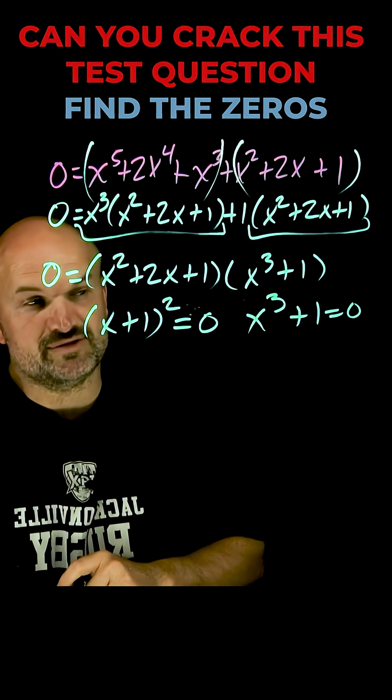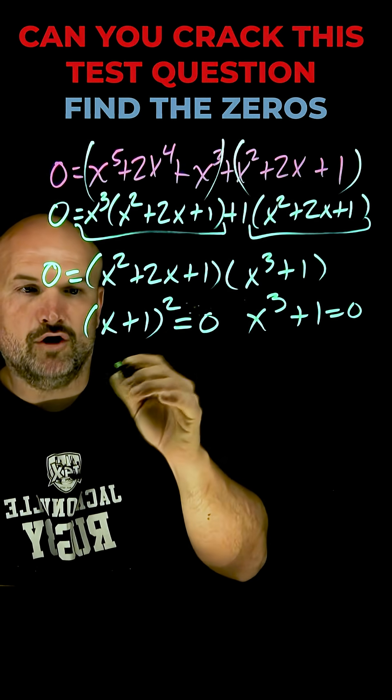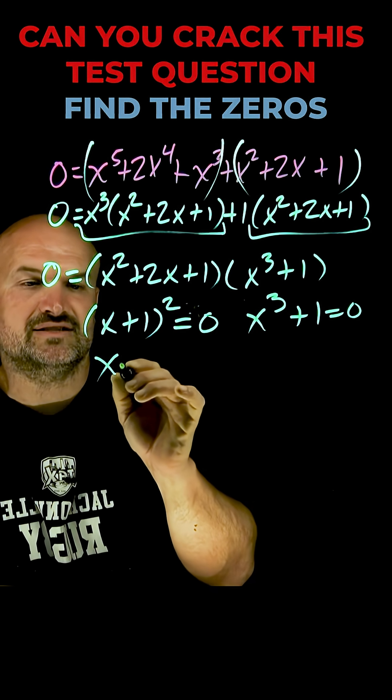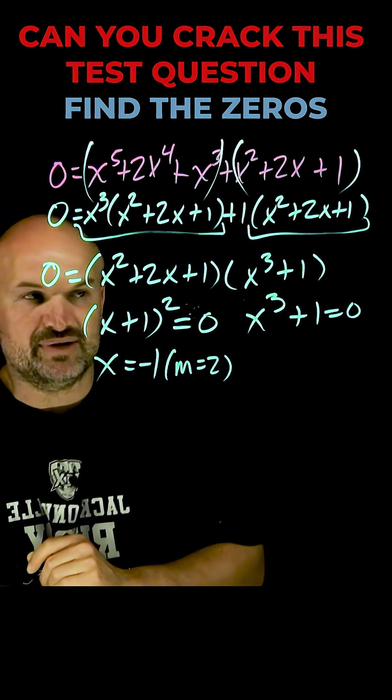Well the only way to factor this is going to be what we call a difference of two cubes. So we need to be able to factor this down a little bit further. Over here I can find these zeros here is going to be x equals negative 1 but that's going to have a multiplicity of 2 because again it's a repeated zero.